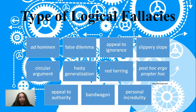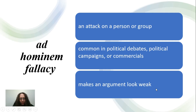There are different types of logical fallacies, and we will not be able to talk about all of them in this video. But we will try to cover some of the most common logical fallacies, which are the ad hominem, false dilemma, the appeal to ignorance, slippery slope, circular argument, hasty generalizations, red herring, post hoc ergo propter hoc, appeal to authority, bandwagon, and personal incredulity.